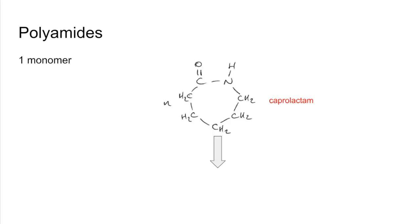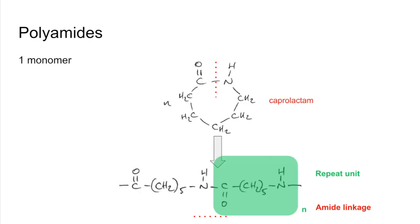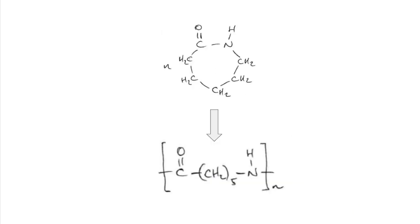Just like we had with polyesters, you can make polyamides with a single monomer. This one here is called caprolactam - you don't need to know the name for this. How come this can work? If we break that bond there, this would sort of open up, and then you've got the C double bond O at that end, the NH at the other end. The next molecule along can just join on. There's your repeat unit and your amide linkage. And there's the equation.